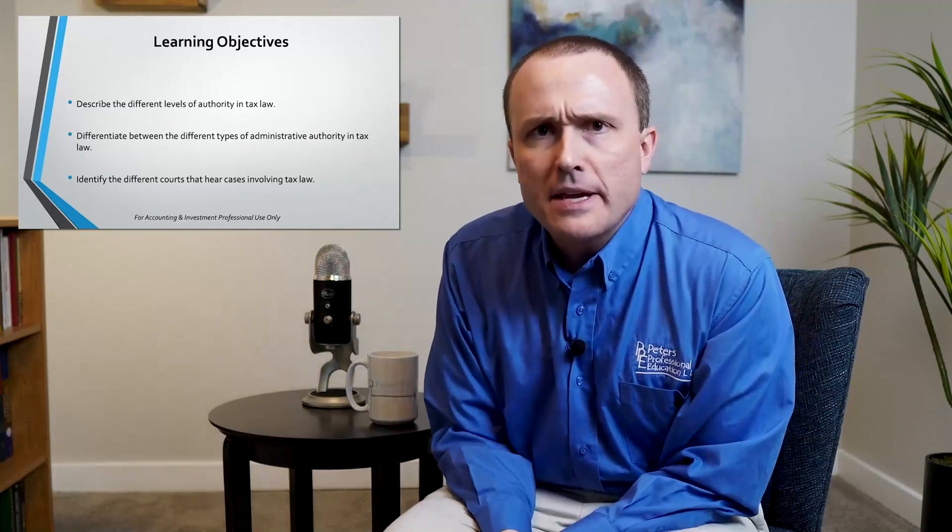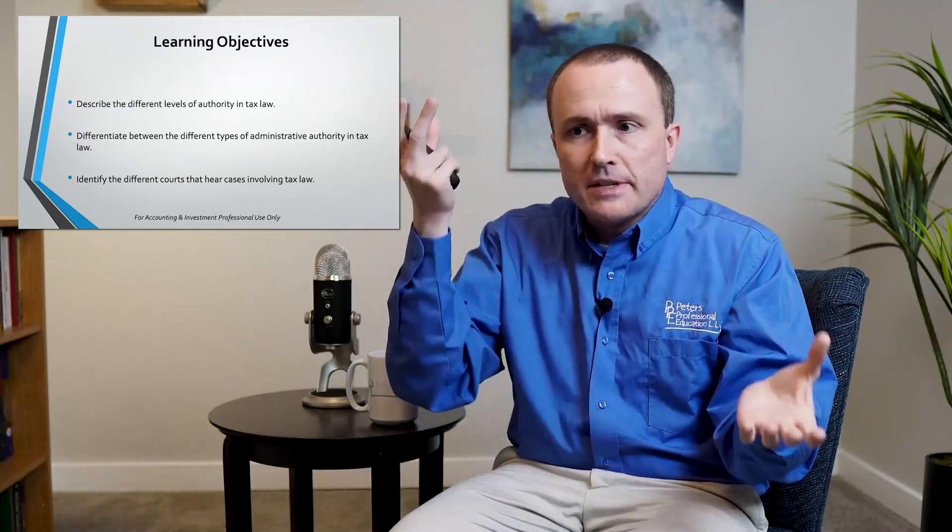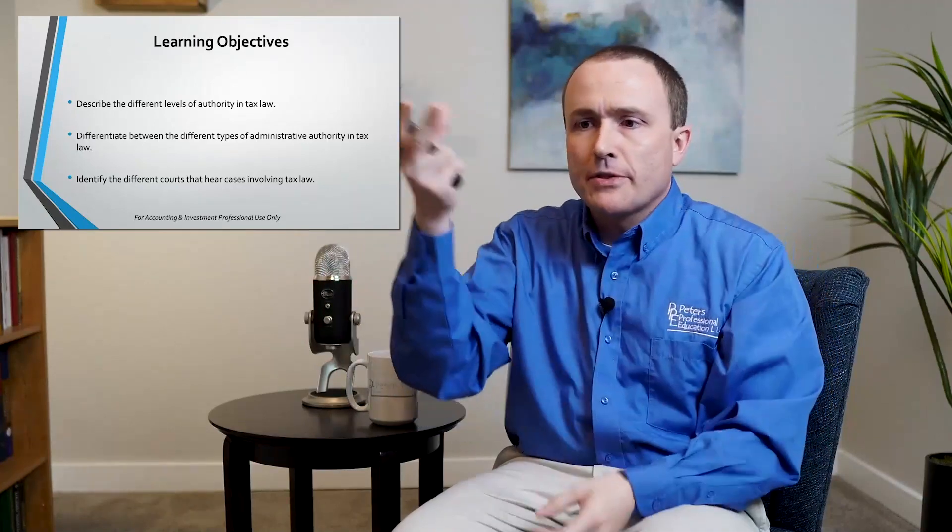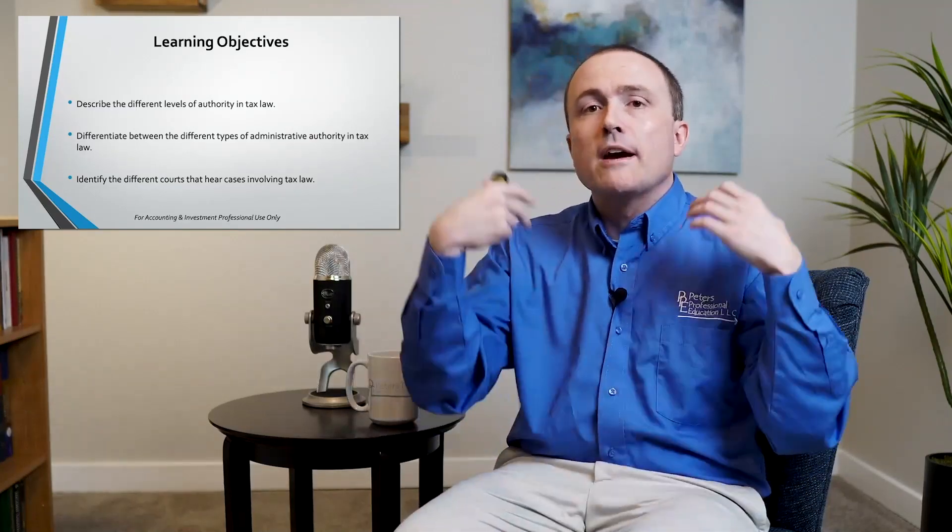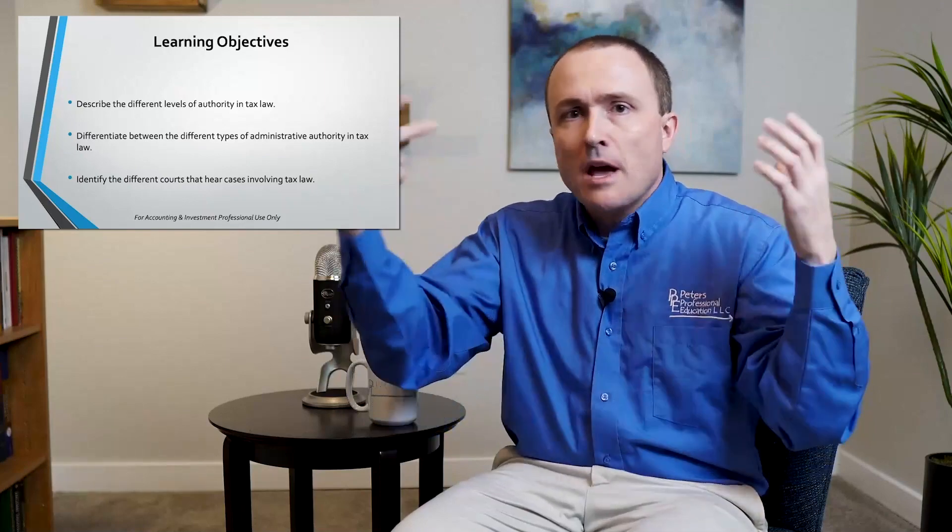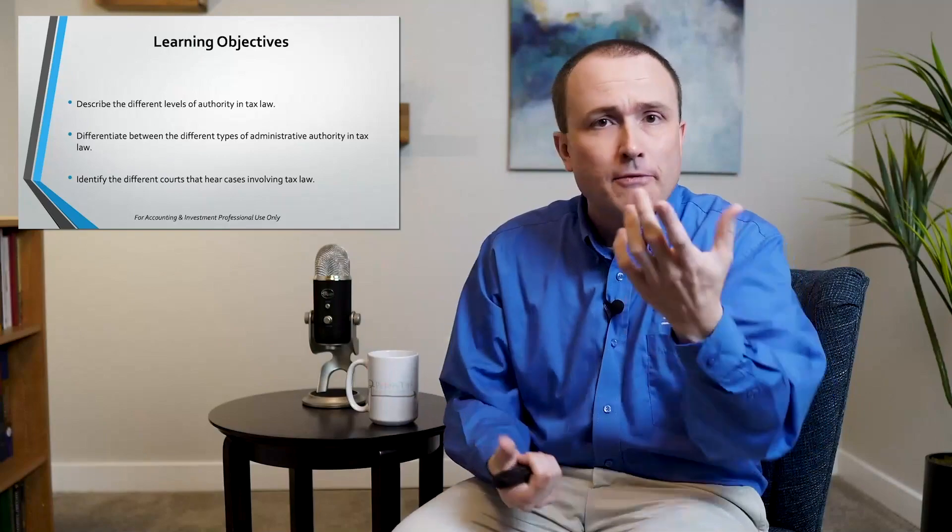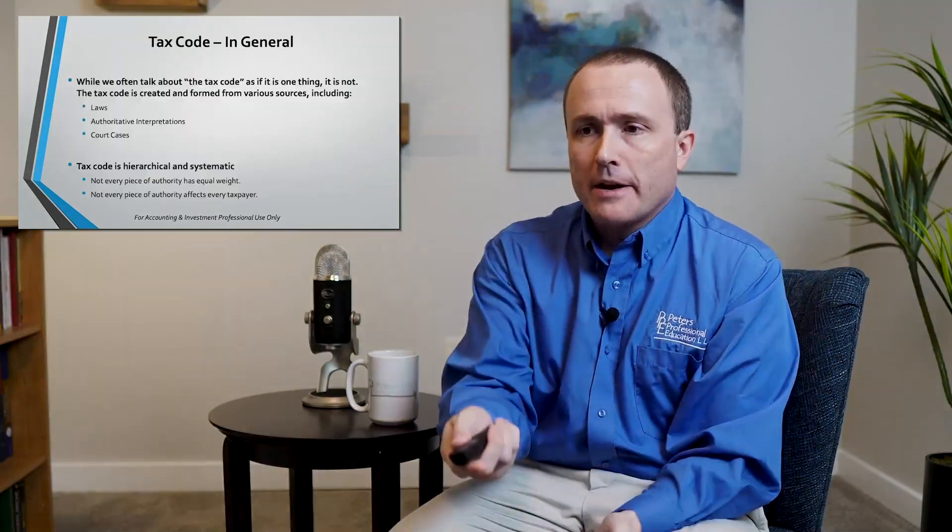Judicial authority is really the courts and the court system. Both of these different types of authority, administrative authority and judicial authority, go into our understanding of tax code, and each of them have a certain degree of weight that we place on each of these pieces of authority. So we're going to learn all about these different types of what we call primary authority.